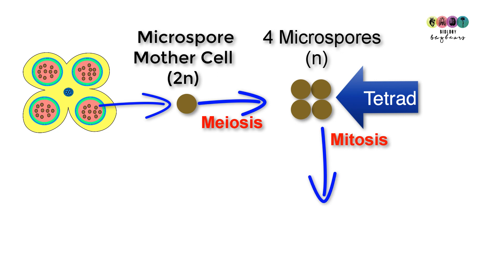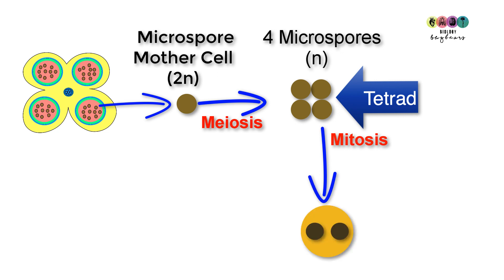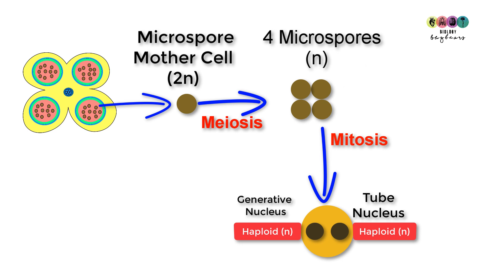Eventually the microspores break apart and each one can undergo mitosis to produce a pollen grain that has two haploid nuclei. One is called the tube nucleus and the other is called the generative nucleus.